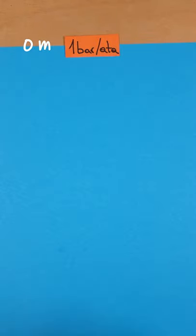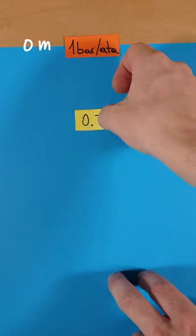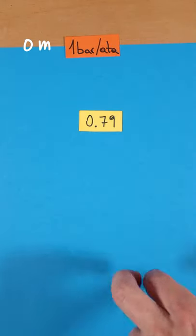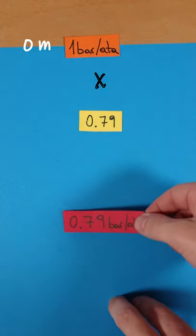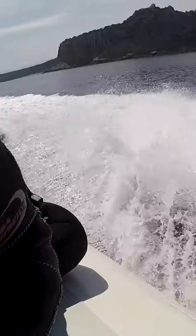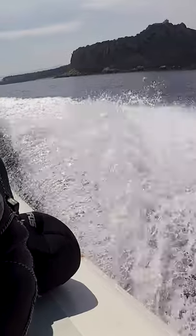The percentage of nitrogen in air is 79%, which expressed as a decimal number is 0.79. The partial pressure of nitrogen in air at the surface is equal to 1 bar times 0.79, which is equal to 0.79 bar. Now let's try with a different gas at a different depth.